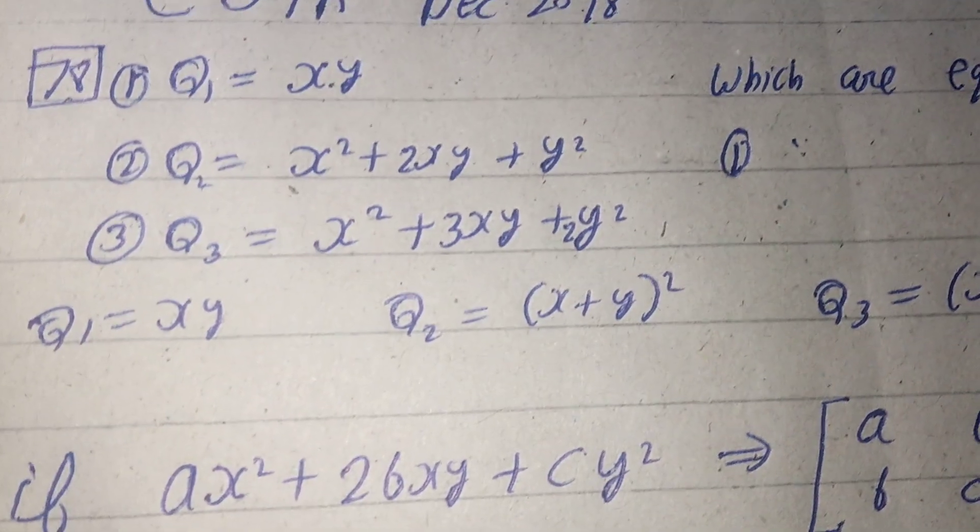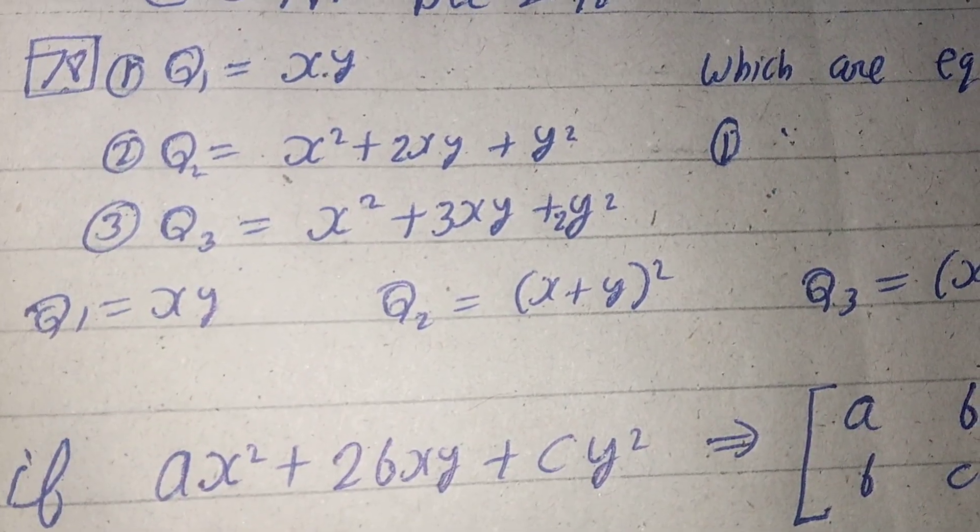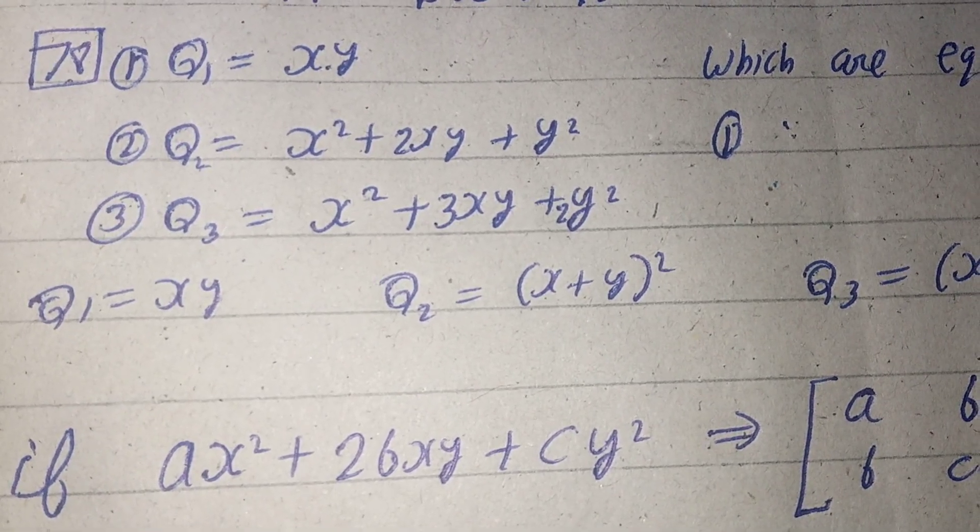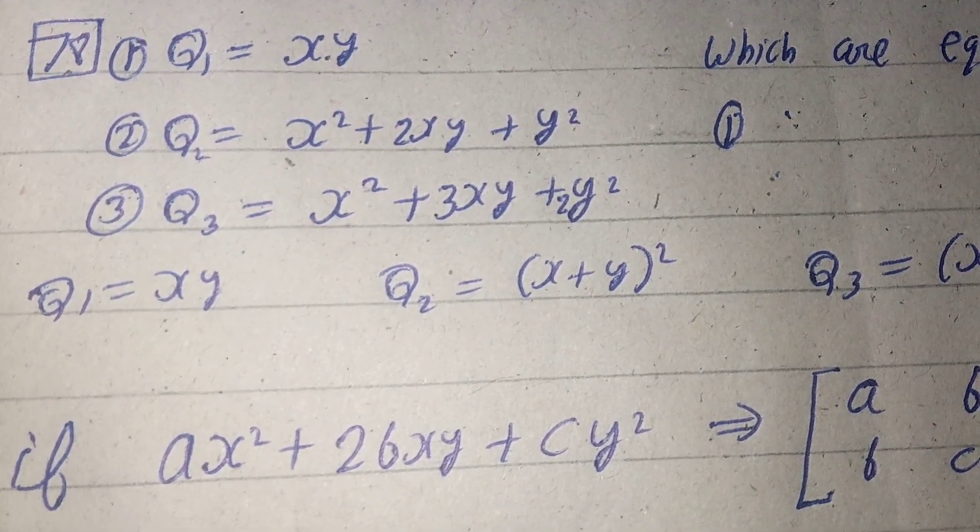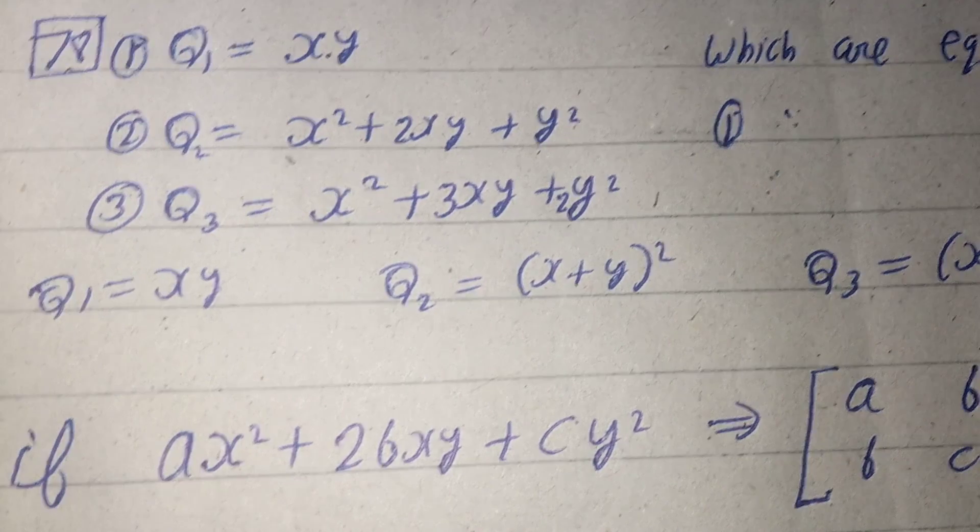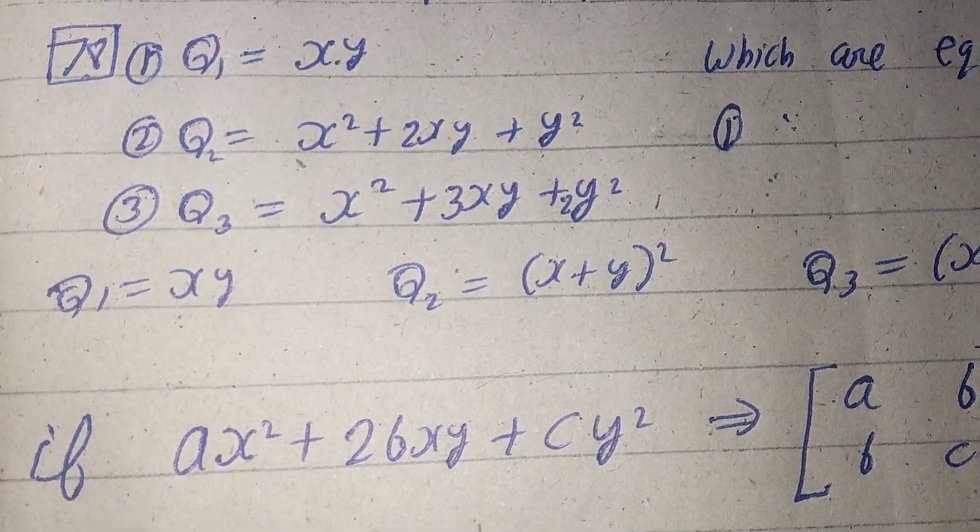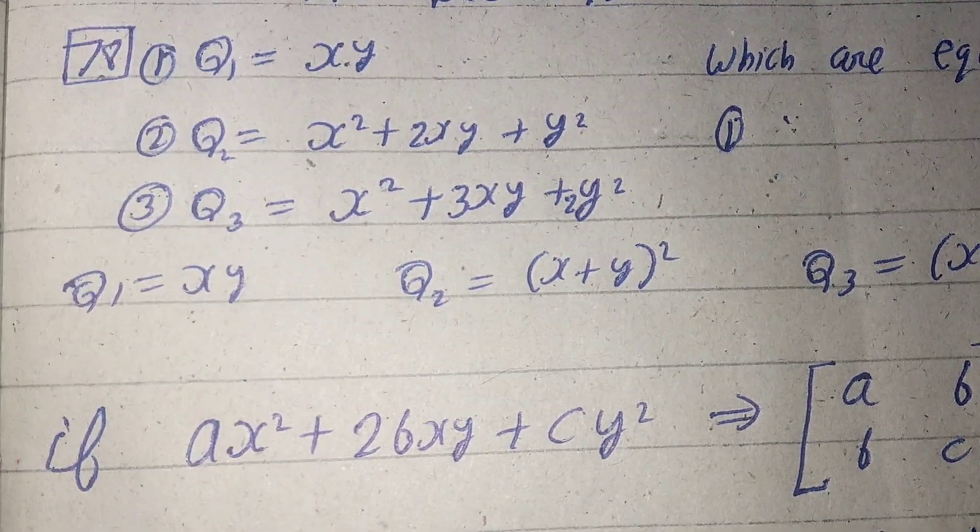But q1 attains negative values at many points, so q1 and q2 are not equivalent. This point is clear: q1 attains negative values at some points, but q2 is always non-negative. So their ranges are not equal; q1 and q2 are not equivalent.